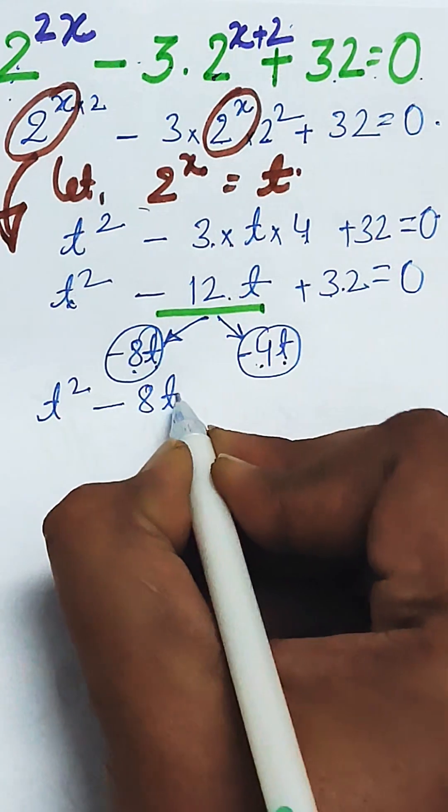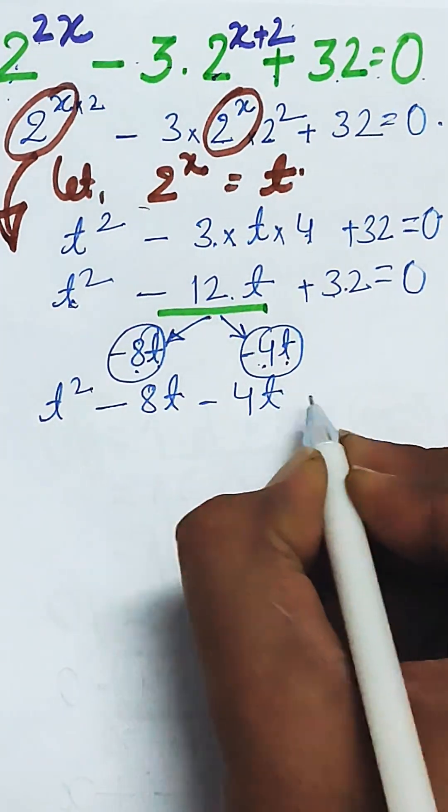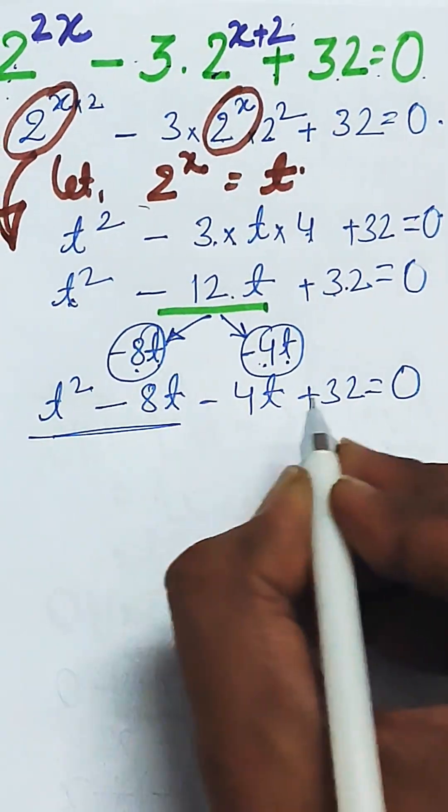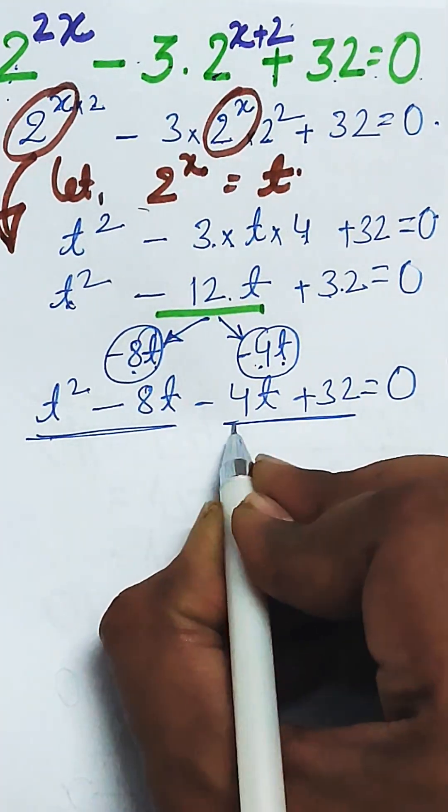t square minus 8t minus 4t plus 32 is equal to 0. Now just make a pair of two terms from the beginning and two terms from the last.